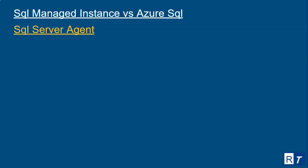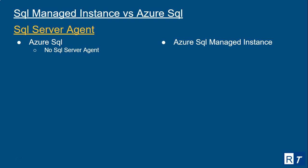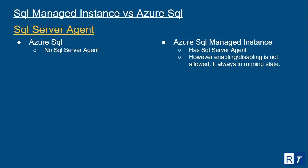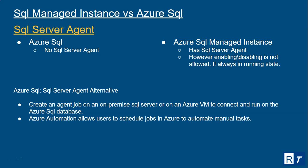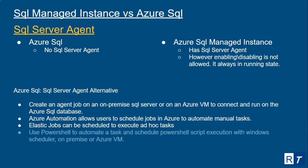For SQL Server Agent: Azure SQL Database has no SQL Server Agent. For Azure SQL Managed Instance, it does have SQL Server Agent, but you cannot enable or disable it — it is always in a running state. As an alternative for Azure SQL Database, you can create an agent job on an on-premise SQL Server or on an Azure VM to connect and run on Azure SQL Database. You can also use Azure Automation, which allows users to schedule jobs, Elastic Jobs as an Azure service for ad hoc tasks, PowerShell to automate tasks, or Windows Scheduler on-premise or on an Azure VM.